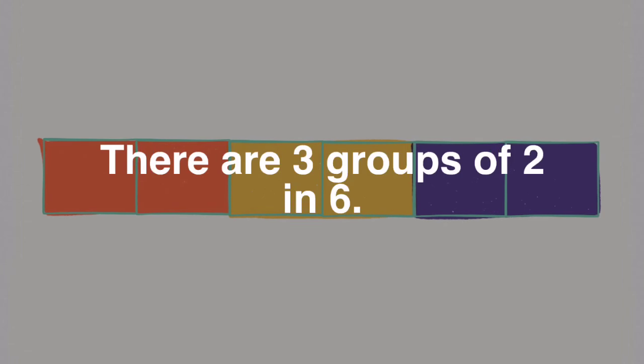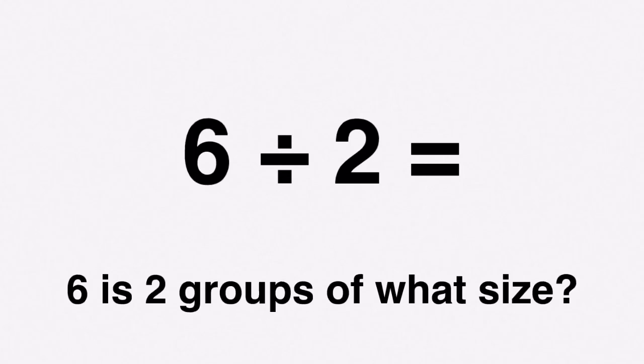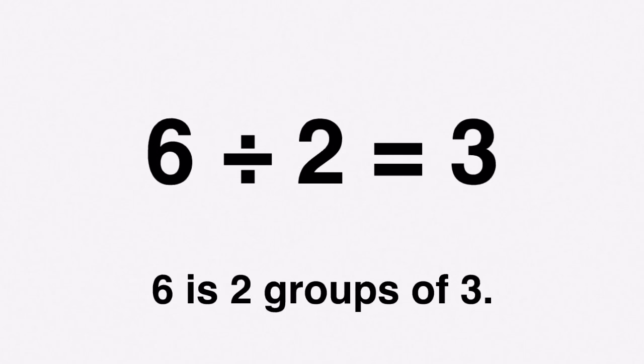There is another way to think through a division problem. Using the same problem — 6 divided by 2 — we said before this could mean how many groups of 2 are in 6. But we can also say: 6 is 2 groups of what size? Because we know the answer is 3, we know that 6 is 2 groups of 3.